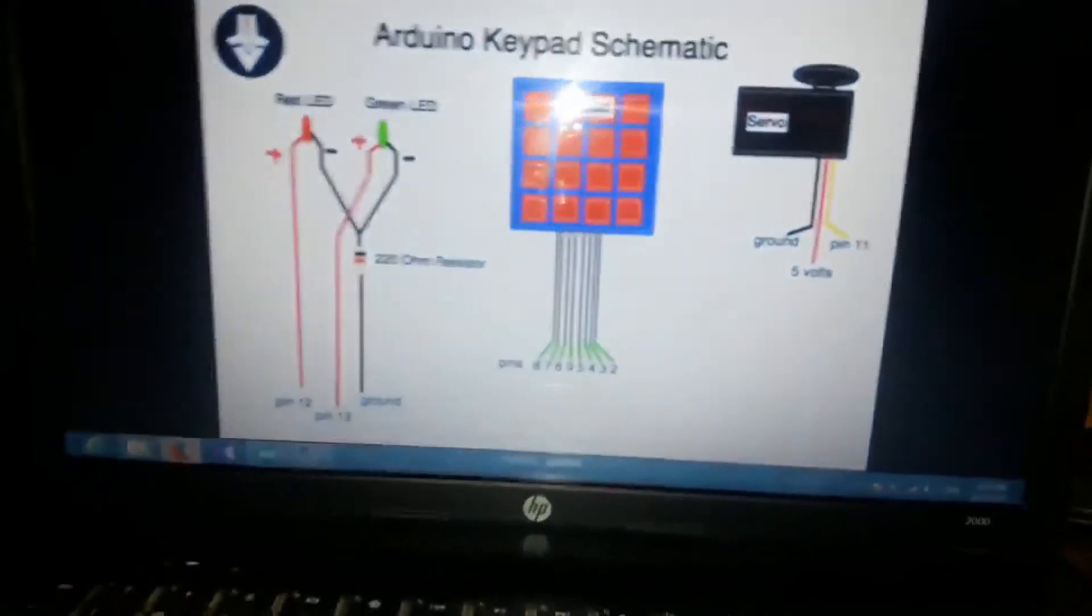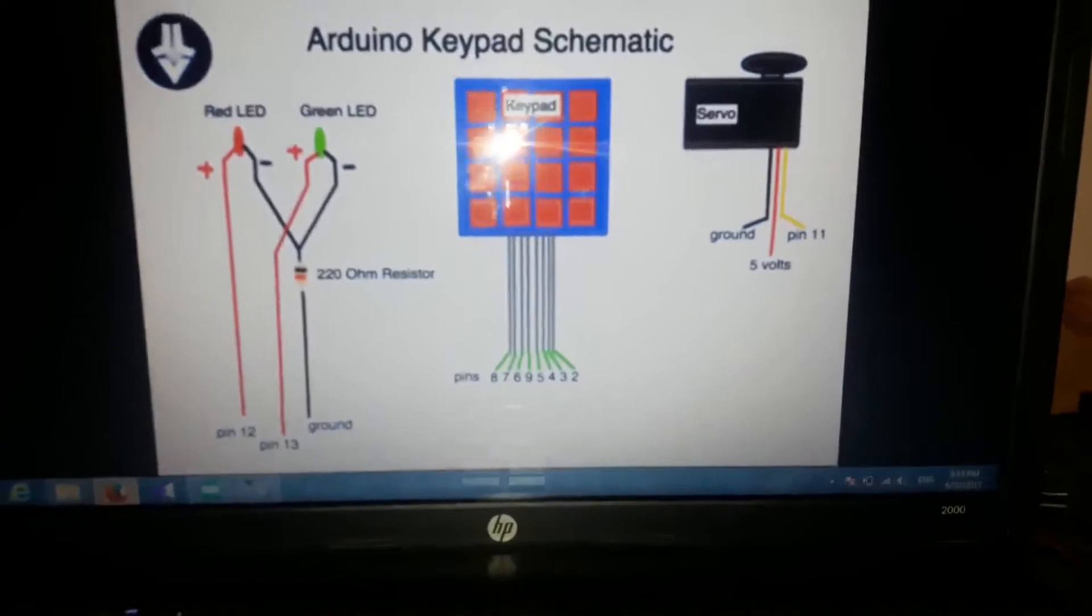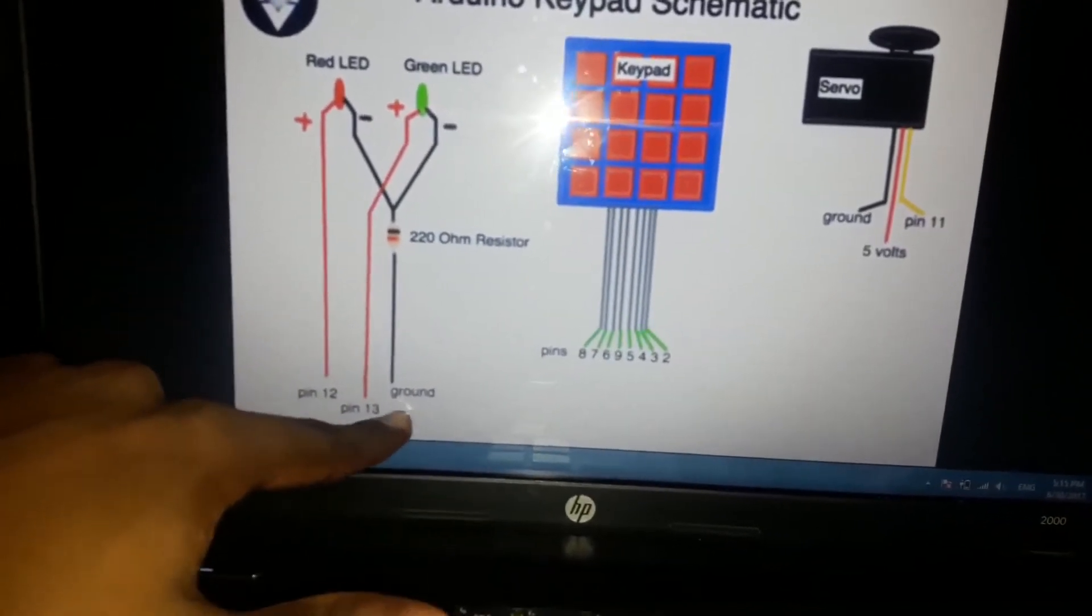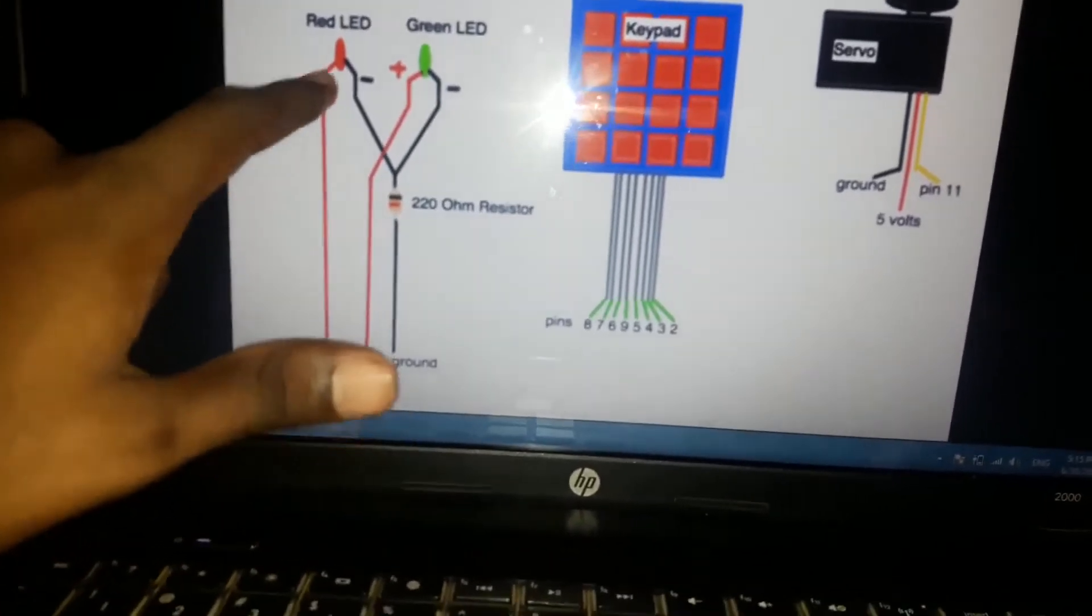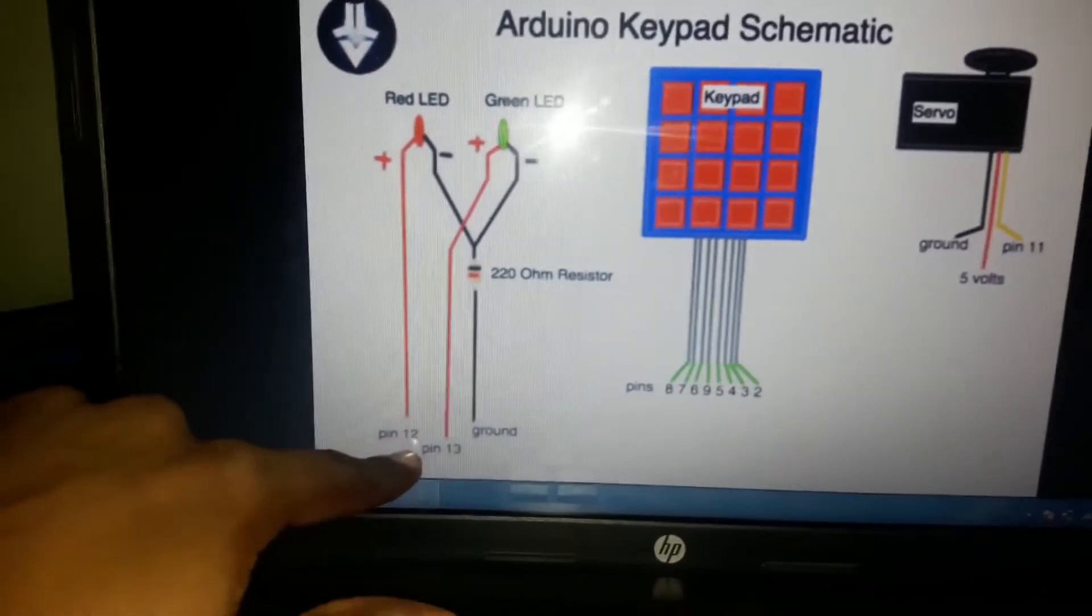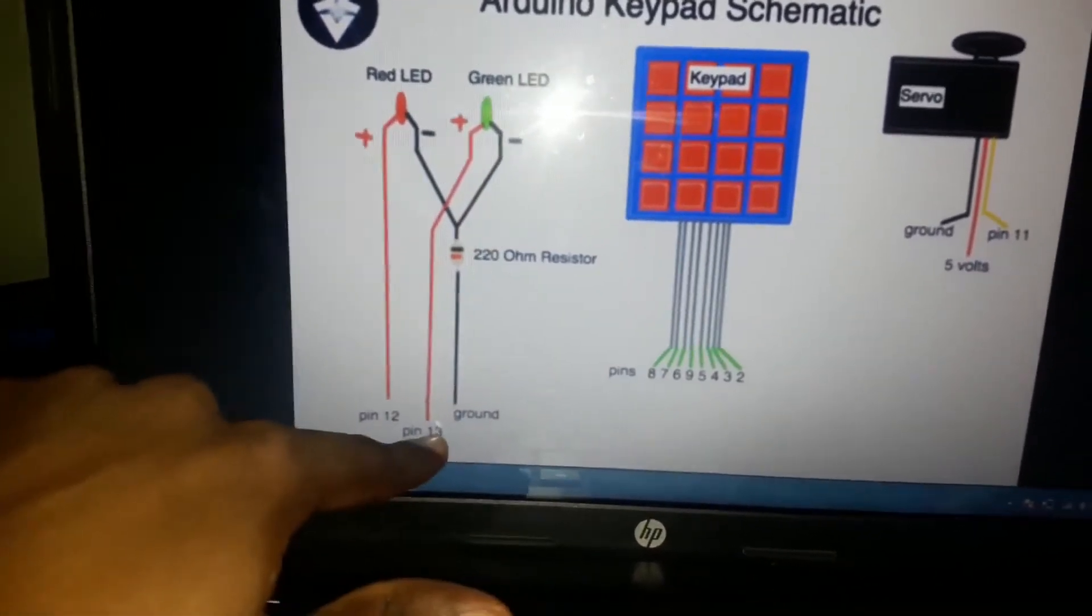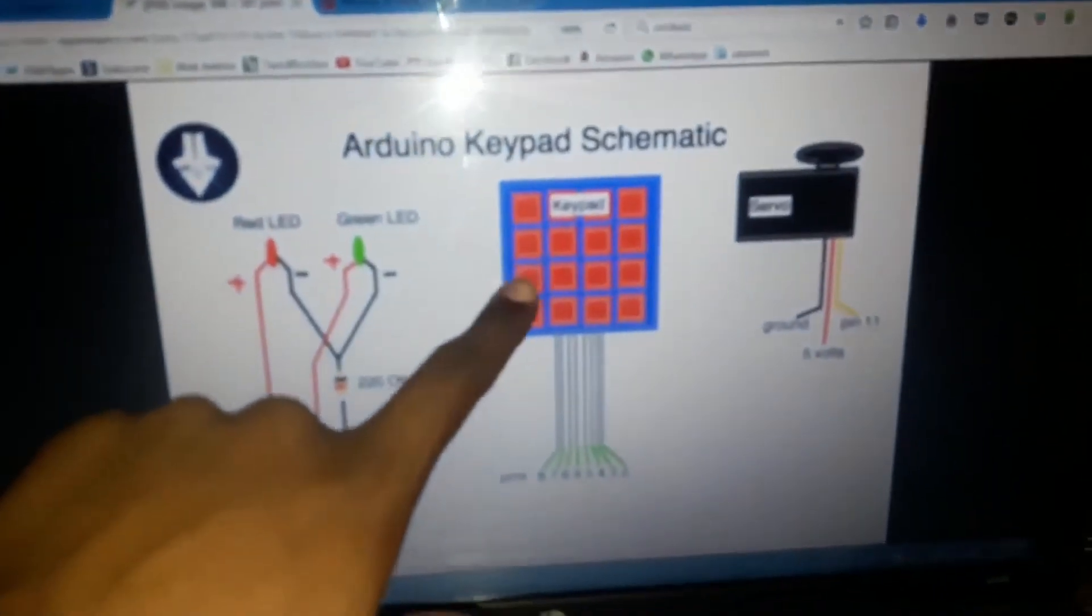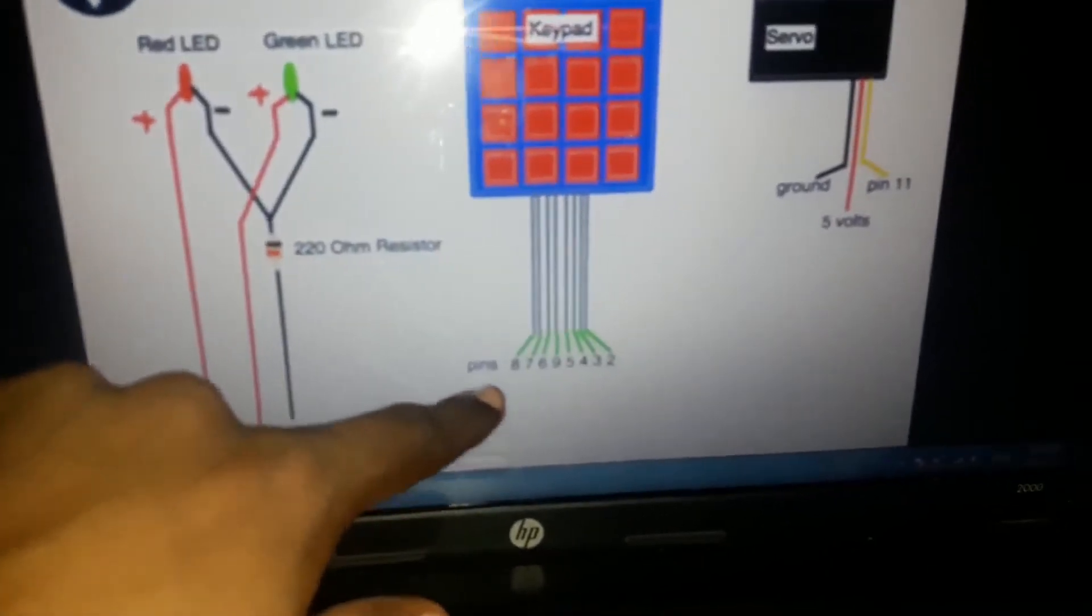Let's see the schematic. Here is the schematic. Like I told, both the negative ones are connected to the resistor to the Arduino ground. Then, red pin. Since I don't have the red LED, I used the blue LED to pin 12. Green to pin 13. I connected like that. Then, the keypad 8 pins are connected to the Arduino pins.